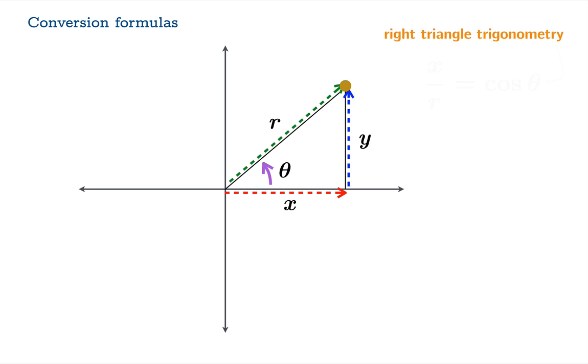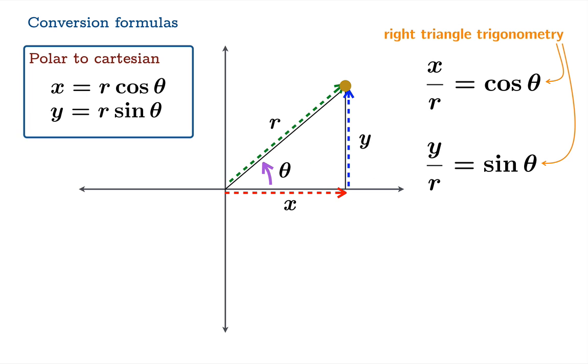Now we're going to use some simple right triangle trigonometry. So the ratio x over r gives us cosine theta and the quotient y over r gives us sine theta. So here we have simple equations which allow us to move from polar to Cartesian coordinates. If we know r and theta, we can quickly generate the values of x and y that describe the same point.